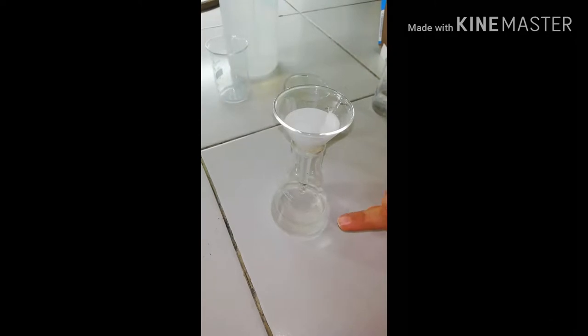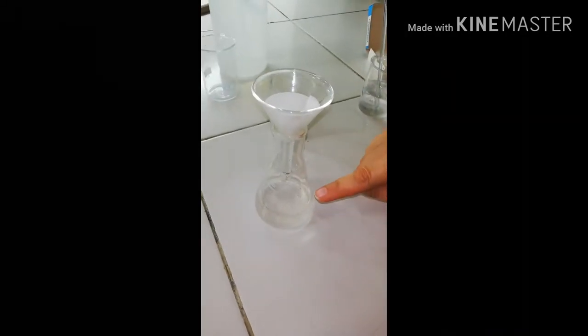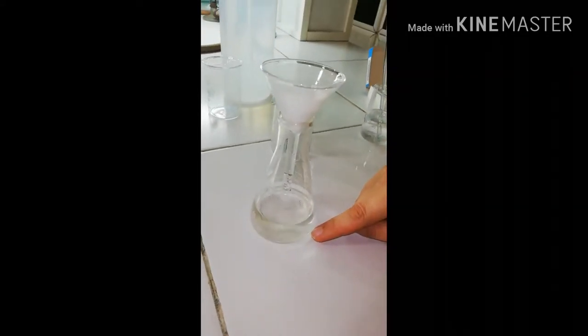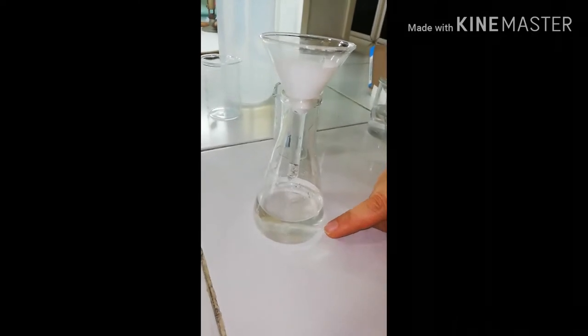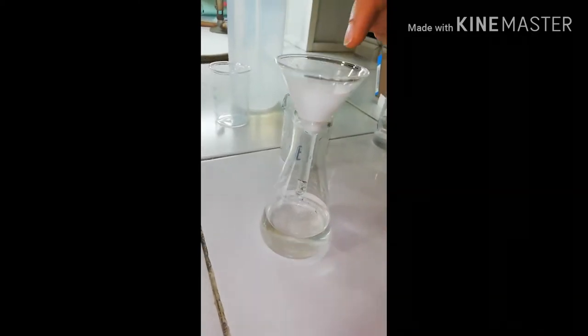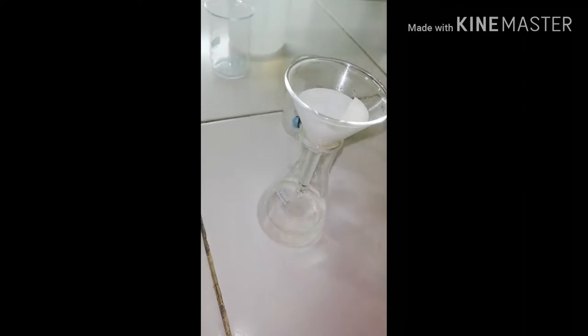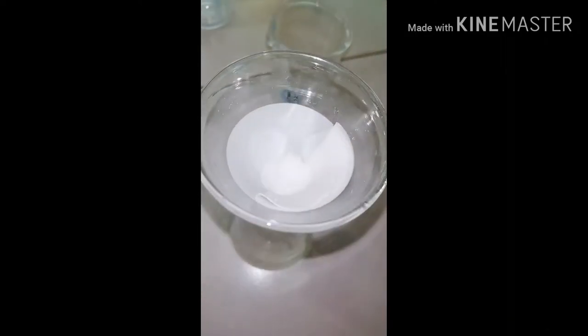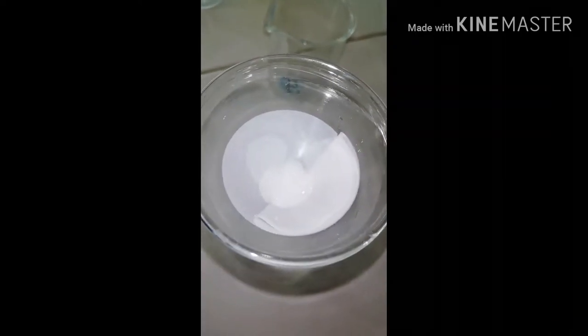These are the results. So here we have the filtrate, which is the saturated solution of salty water. And you see it's one phase. And here on the filter paper, we have the residue, which is the excess amount of salt that was undissolved.